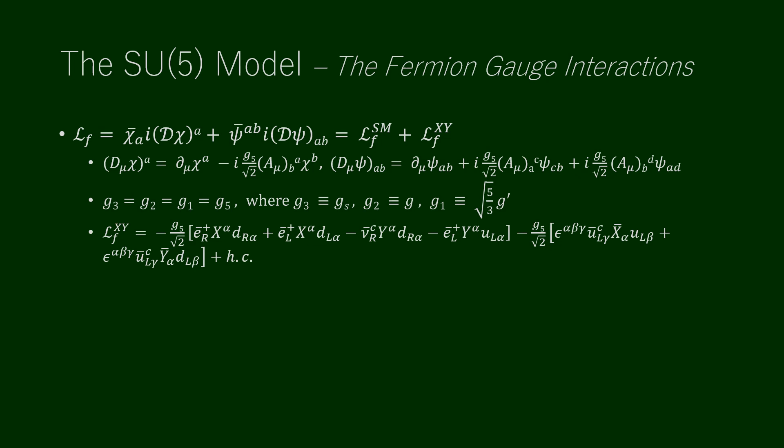The fermion gauge interactions are written, where the fields are weak eigenstates and a sum over families is imposed. The gauge covariant derivatives are shown, where g5 is the SU(5) gauge coupling. The Lagrangian for the standard model includes the kinetic energy terms and the standard model fermion gauge interactions, with the restriction that the gauge couplings are unified.